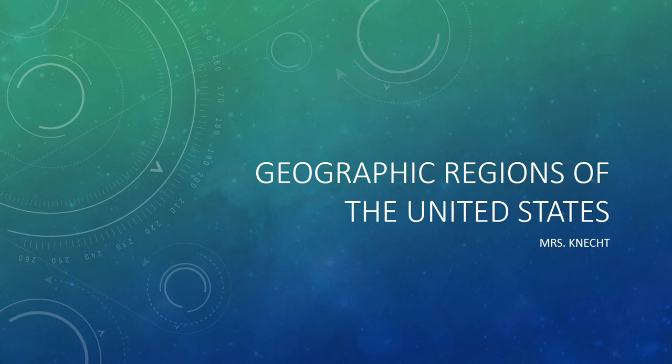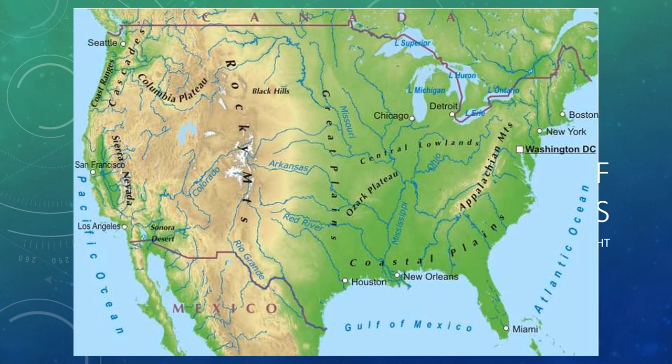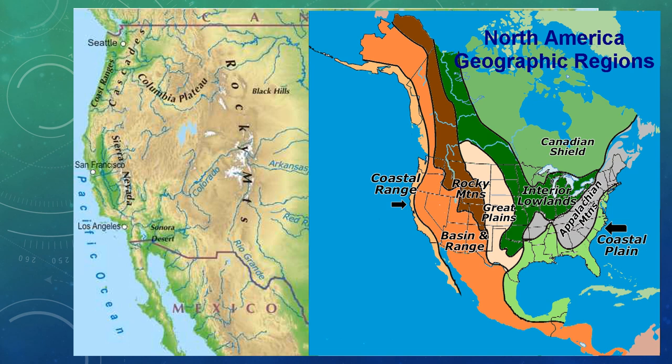Geographic Regions of the United States. As we look at a physical map of the United States, you will notice various elevations and land features highlighted as we scan the map from east to west, from sea to shining sea. Notice that the lower land is in shades of green and the higher elevation is shown in shades of browns, tans, and yellow. In this video, we will explore the geography of the United States and break up the land features into distinct and distinguishable regions.